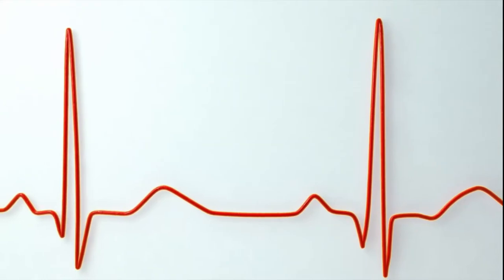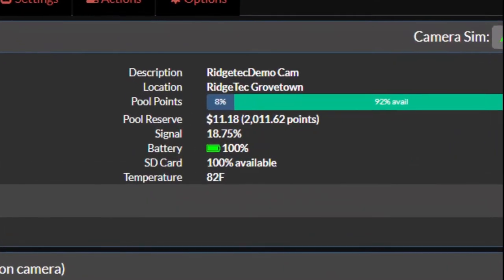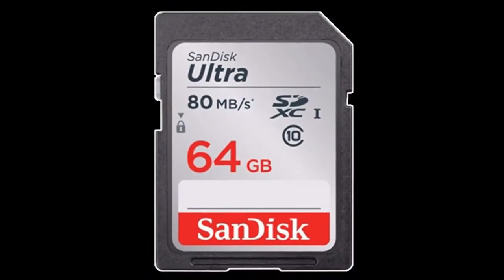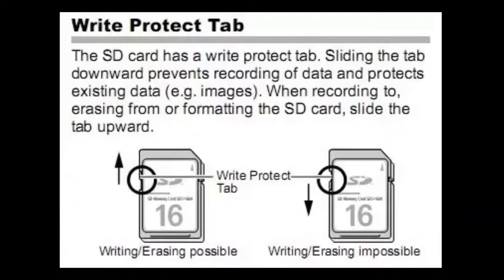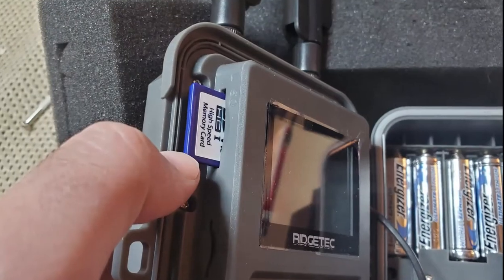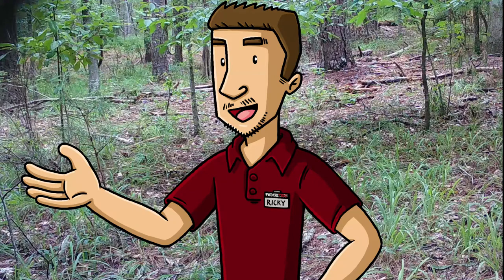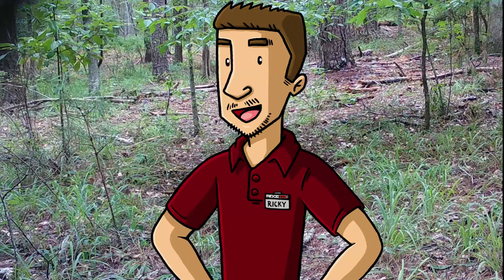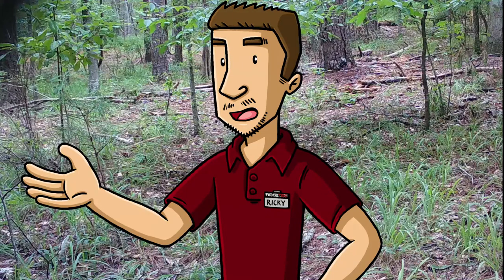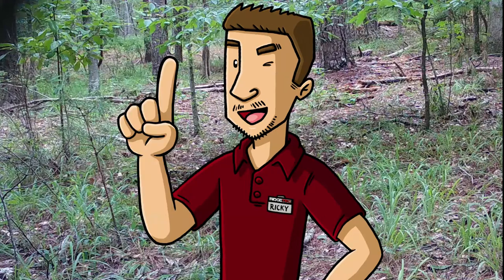If your camera is sending a heartbeat but no photos, and isn't having signal or battery issues, this likely means there's a problem with your SD card. Make sure you haven't locked the card with the tiny lock switch on the side, and if that isn't the issue, replace the card and try again. Perform our recommended camera diagnostics and perform a manual upload. If there are still SD card problems, you'll see an error message on the LCD screen. Make sure you're using a quality SD card — we offer a Class 10 card in our online store.